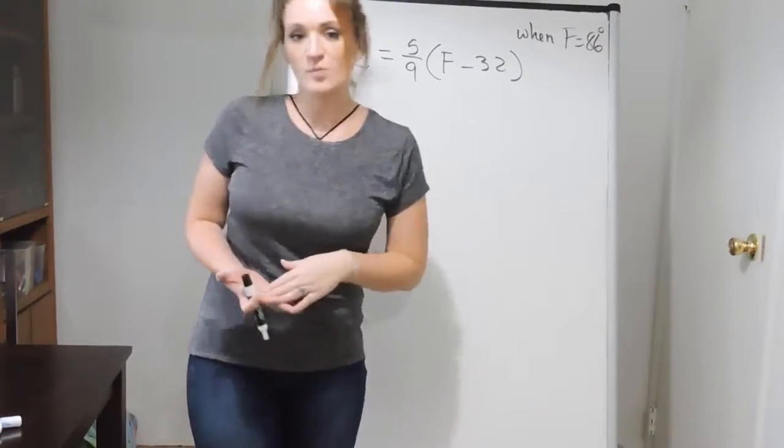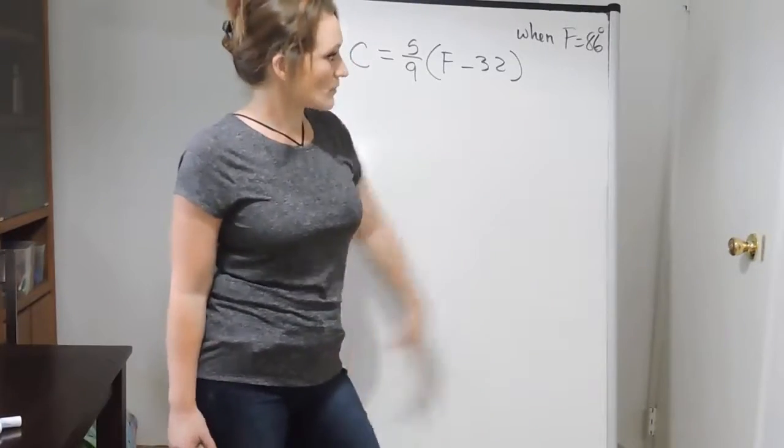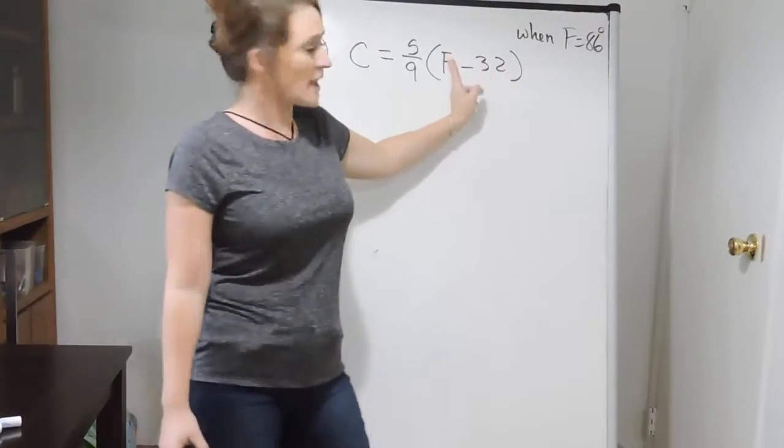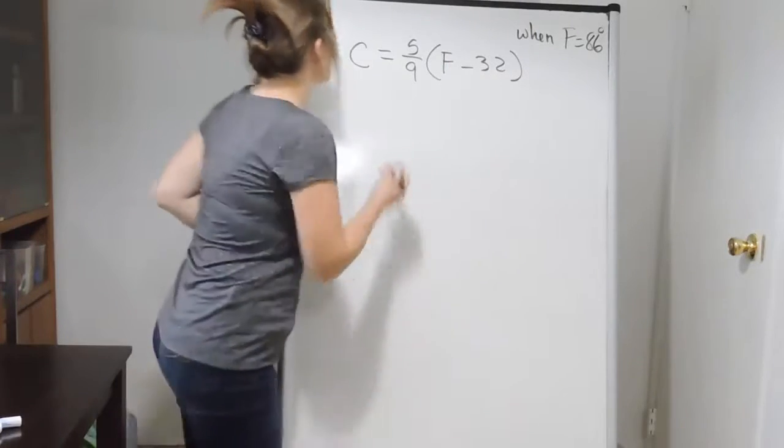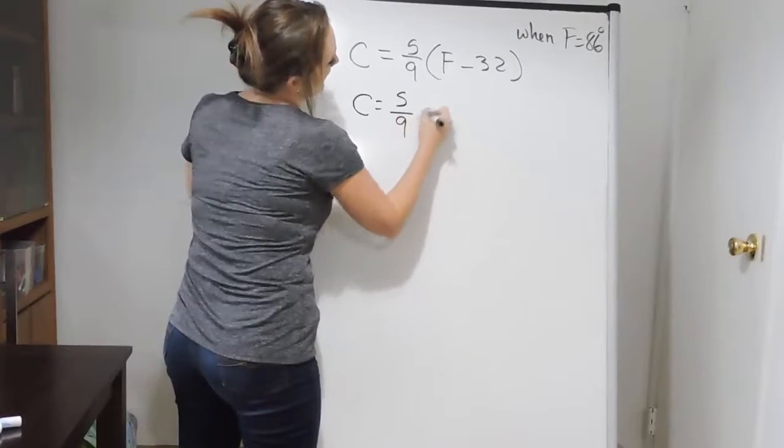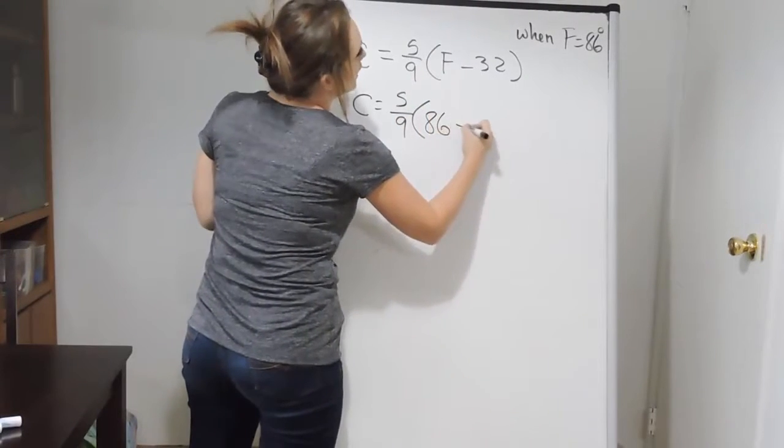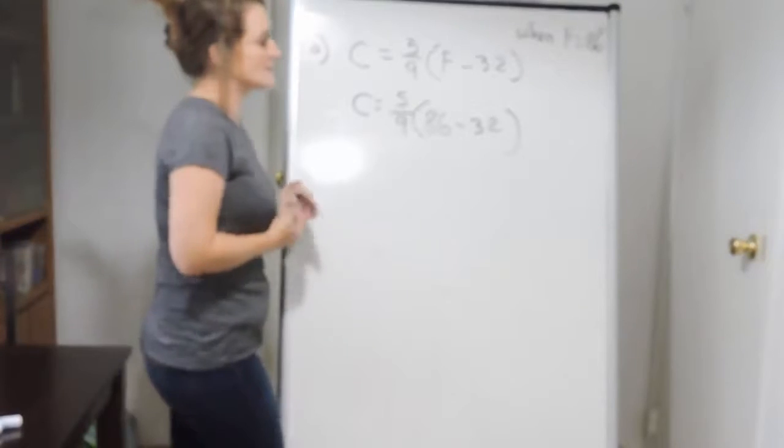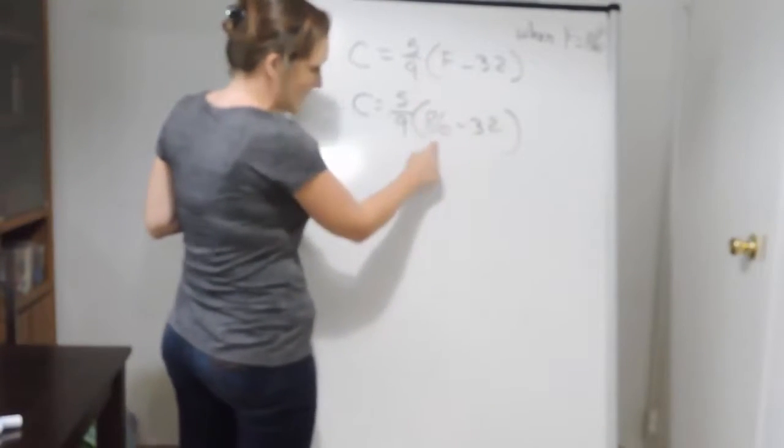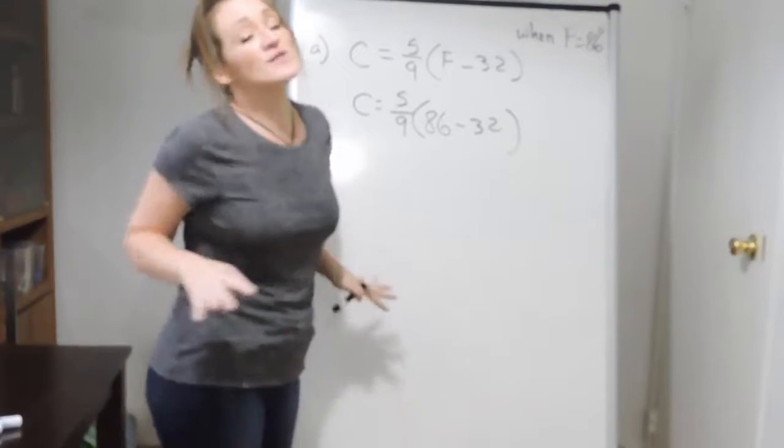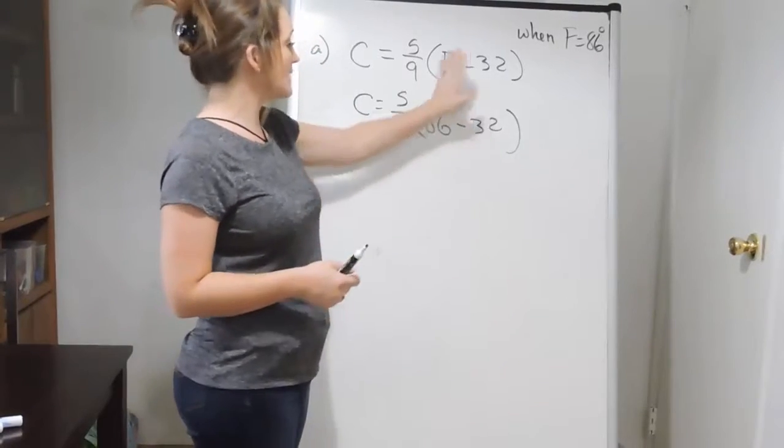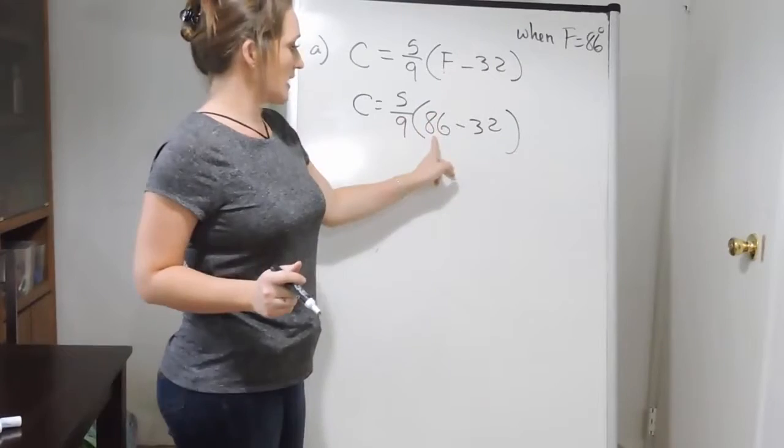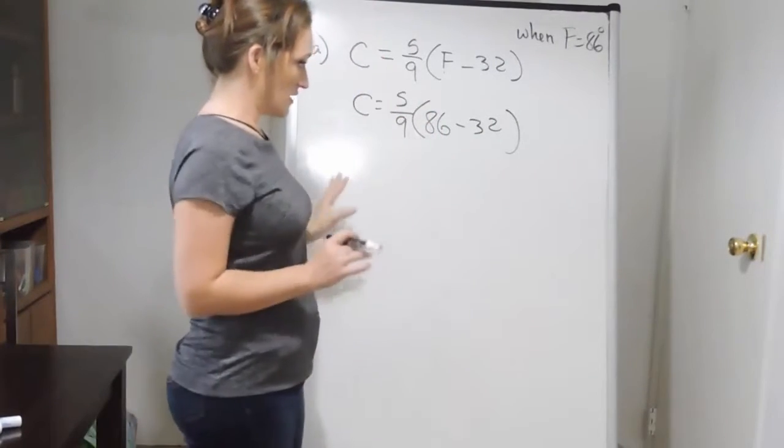All right, so this is what I call a plug and chug problem. You're given the formula, you're given the number to plug into it. So what we're going to do with this example here is we're going to take our number, we're going to plug it into the formula, and we're going to chug away. All right, so step one, make sure that when you are plugging in, that when you're substituting into the formula, you are literally substituting in directly into the formula. Nothing changes except for the fact that instead of the F, we now have an 86. Everything else needs to stay the same. Don't change anything. No signs, no parentheses, nothing.